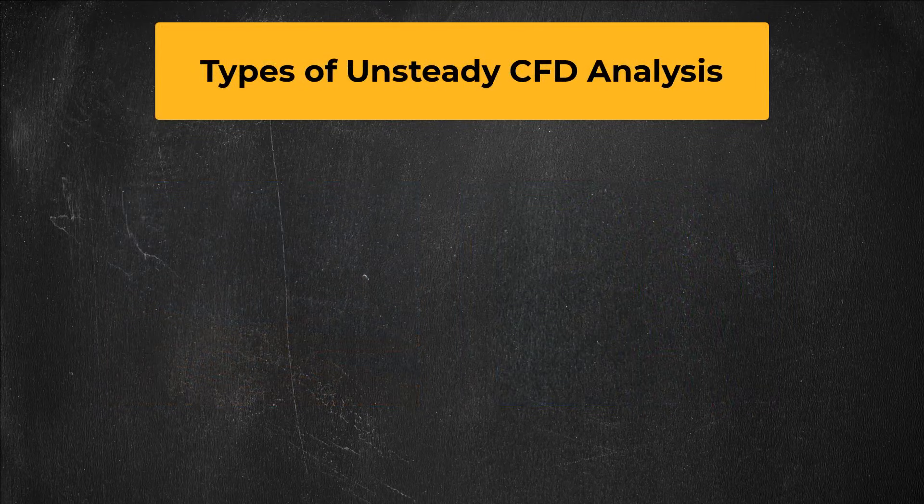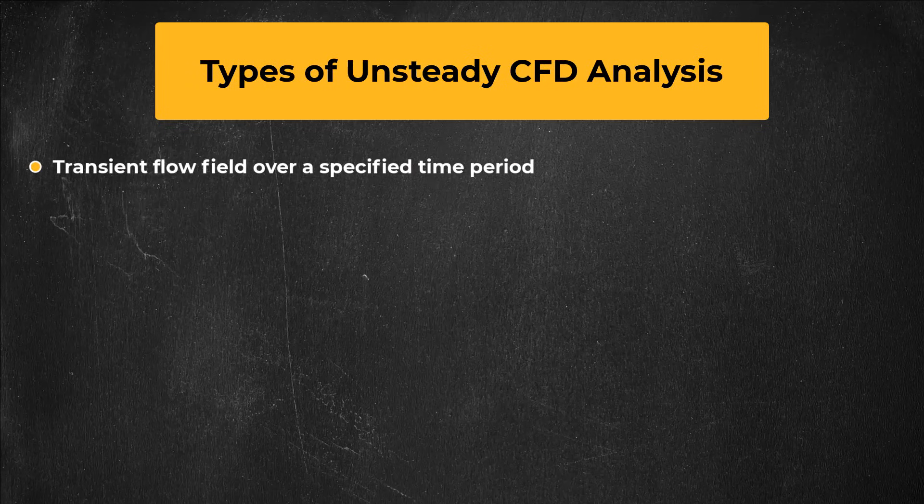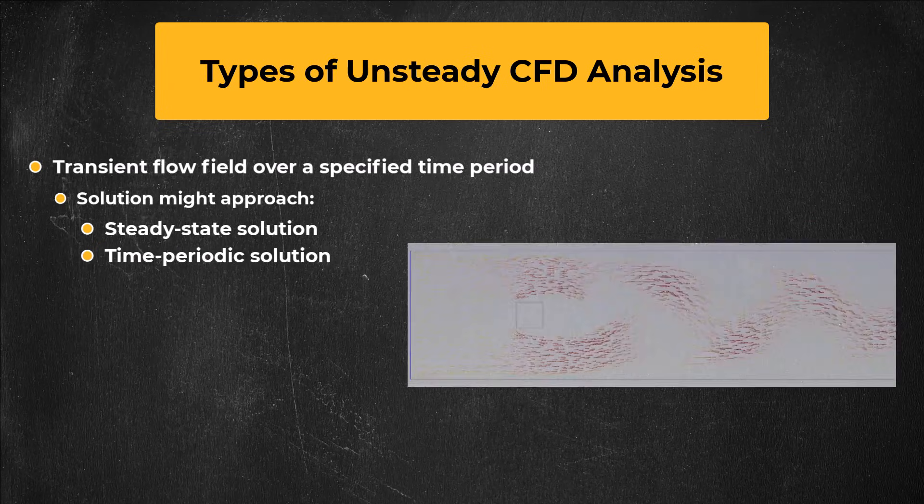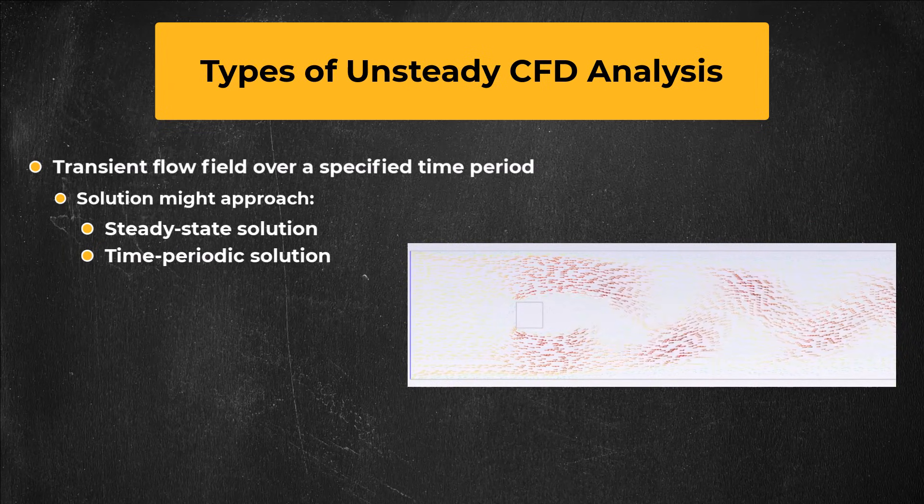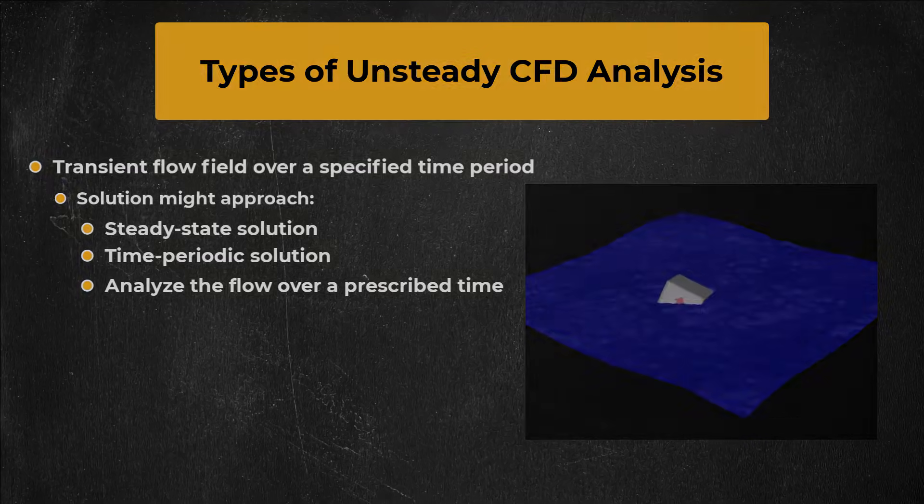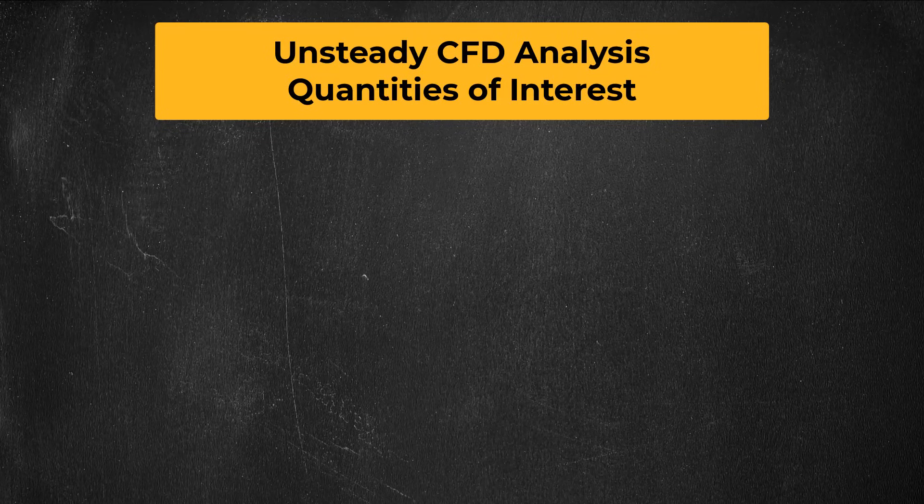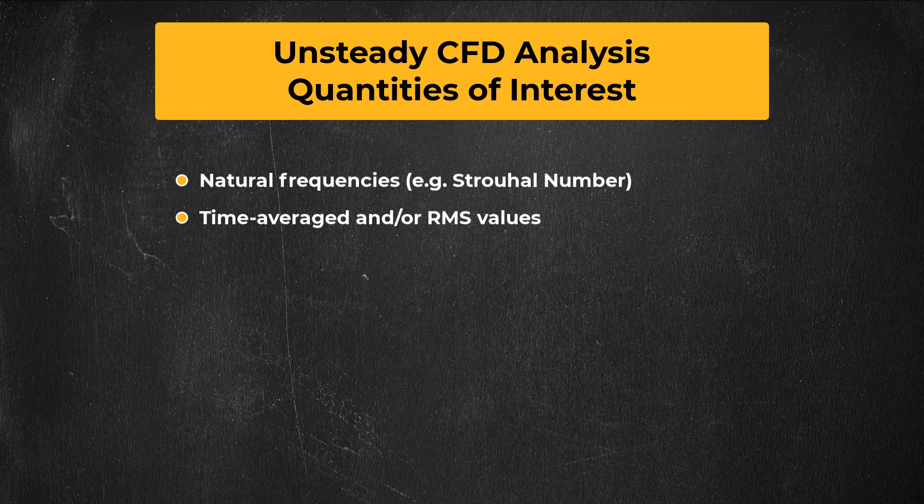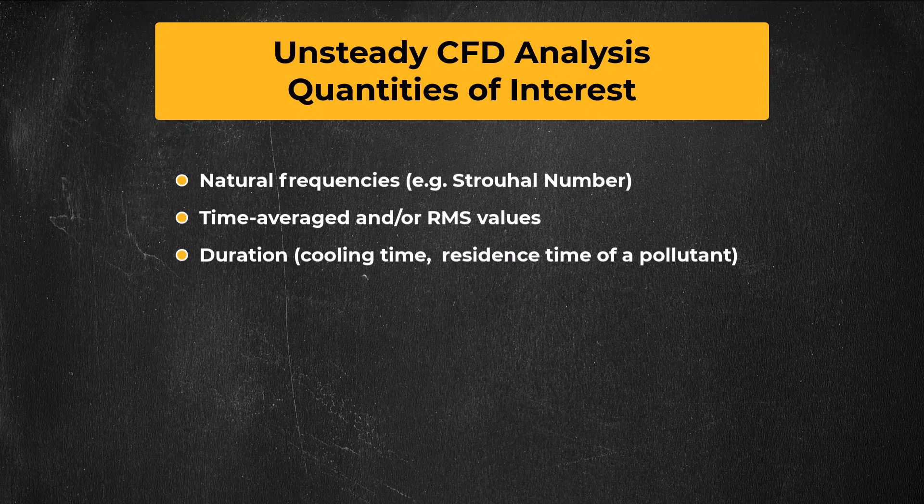An unsteady CFD analysis involves simulating a transient flow field over a specified time period. During this time period, the solution might approach a steady state value, like if you're seeing how long it takes to heat an object, or it might be time-periodic behavior, such as vortex shedding. Other times, the goal might be simply to analyze the flow over a prescribed time period. There are certain quantities of interest that you can only calculate with an unsteady analysis, and this might include natural frequencies such as the Strouhal number for vortex shedding. Other times you might be interested in time-average or root-mean-square values, or you might be interested in time-related parameters like how long it takes to cool a hot solid, or you might want to use Fourier transforms to extract spectral data.